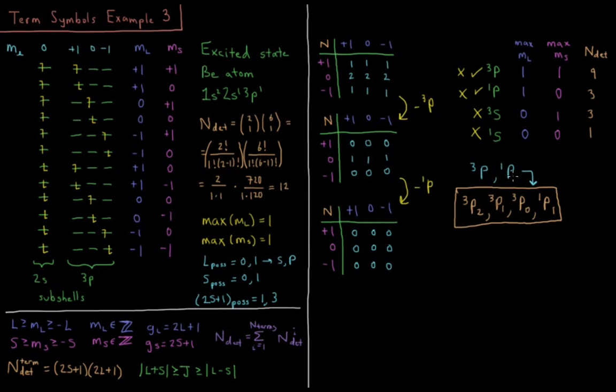For singlet P, the only value of J is 1, J going from L plus S to L minus S. L equals 1, S equals 0. For triplet P, S equals 1, so we have values of J of 1 plus 1 down to 1 minus 1. So we have triplet P2, triplet P1, triplet P0, and singlet P1 for our term symbols of this excited state beryllium atom.